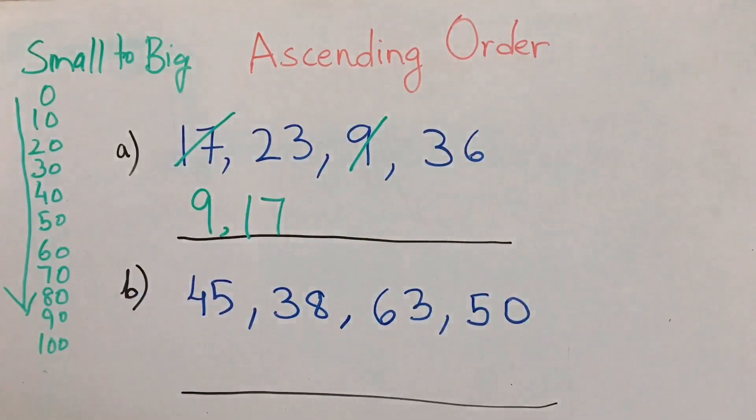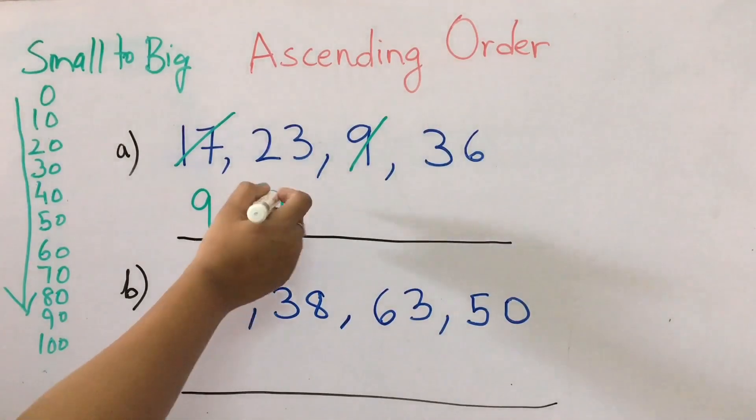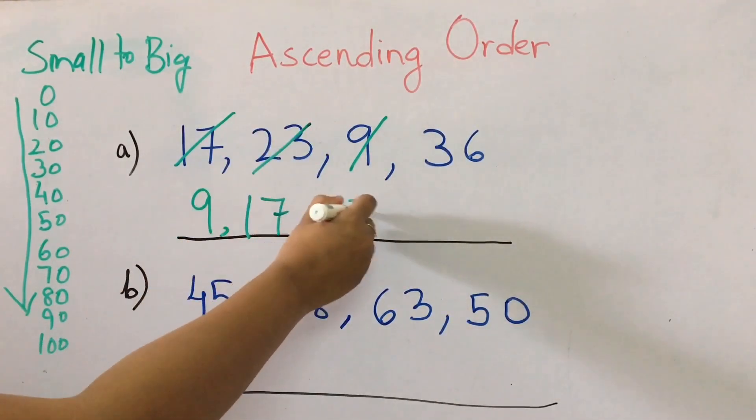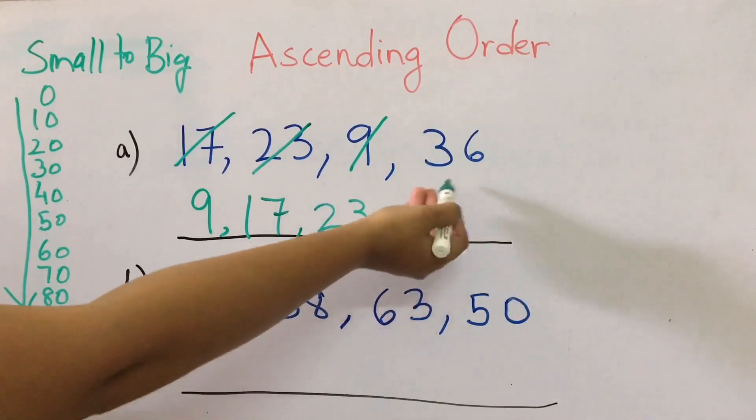Now next, we'll see in the 20s range. 20 to 30, do we see any number? Yes, we have 23. So we'll cut here and we'll write 23. Then the last, you know which is left is the biggest number, so that is 36.